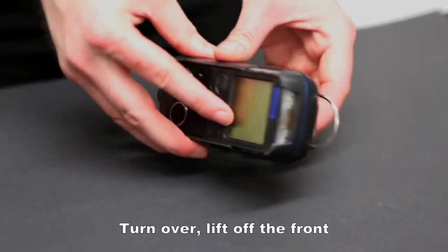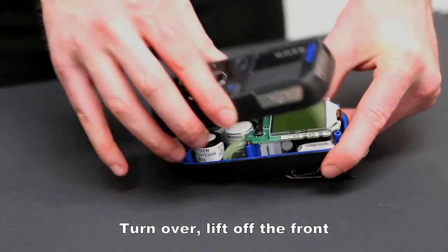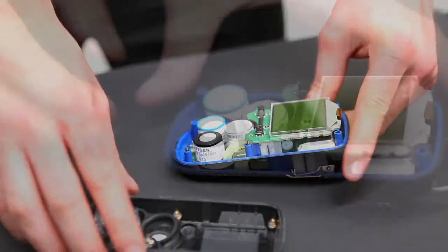Turn Marine 4 over and lift off the front. This will reveal the three sensors. These can be lifted out.